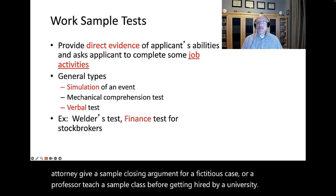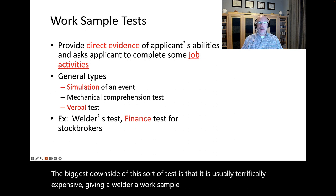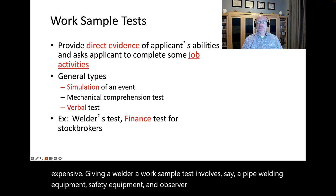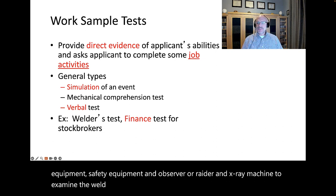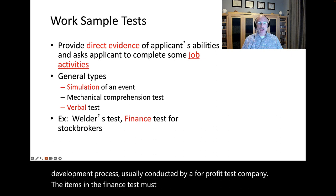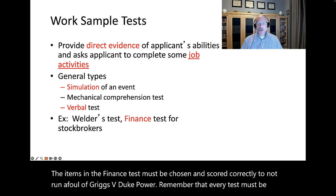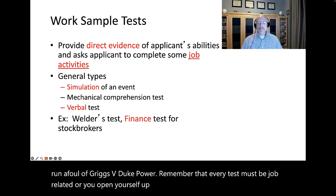The biggest downside of this sort of test is that it is usually terrifically expensive. Giving a welder a work sample test involves a pipe, welding equipment, safety equipment, an observer or rater, an x-ray machine to examine the weld. A finance test requires an extensive test development process, usually conducted by a for-profit test company. The items in the finance test must be chosen and scored correctly to not run afoul of Griggs v. Duke Power. Remember that every test must be job-related, or you open yourself up to litigation.